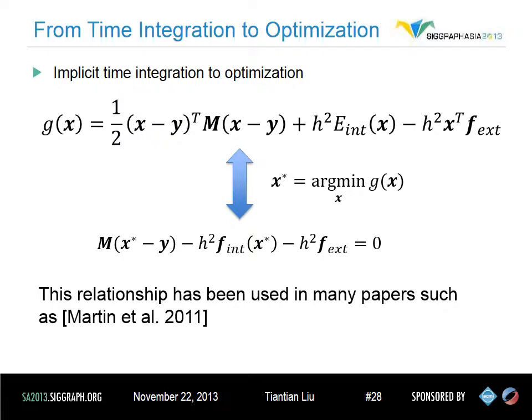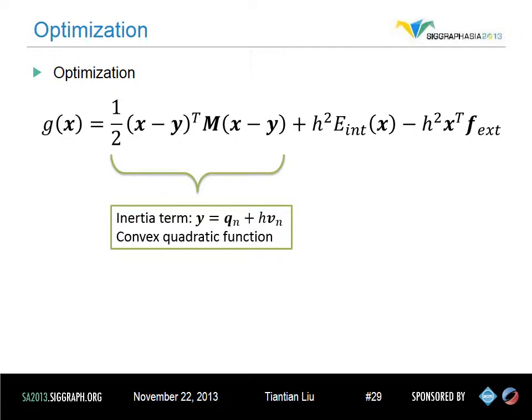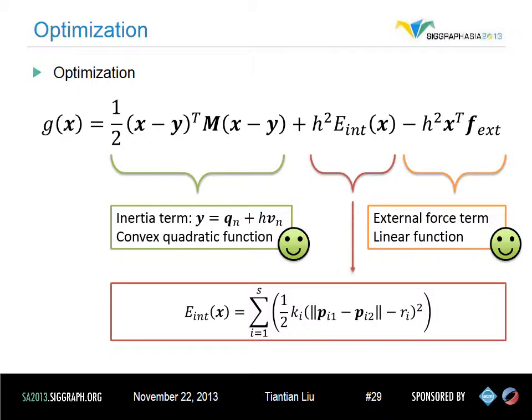This relationship has already been used in some work such as example-based elastic materials in 2011. Looking at this optimization formula: the first term is the inertia term, where y = q_n + h*v_n, and it is a convex quadratic function of x with a constant diagonal mass matrix. The last term is the external force term, where x has a trend to go in the same direction as the external force — it is linear in x, which is also good. The second term is the internal energy term, which can be seen as the sum of all spring energies defined by Hooke's law. The optimization becomes hard because this term is not a simple quadratic potential.